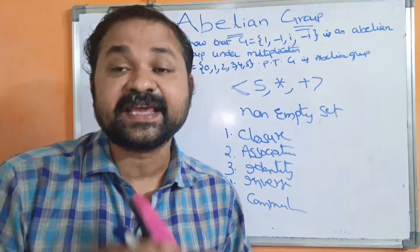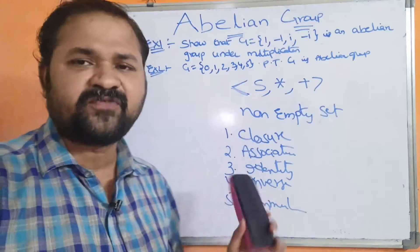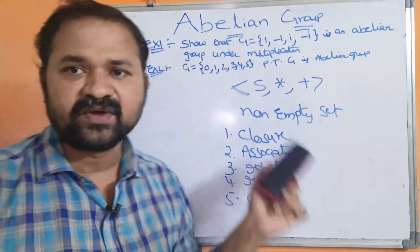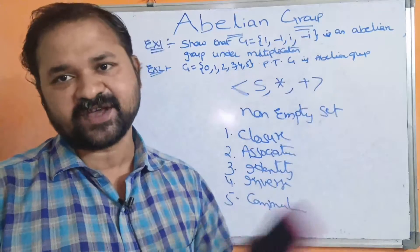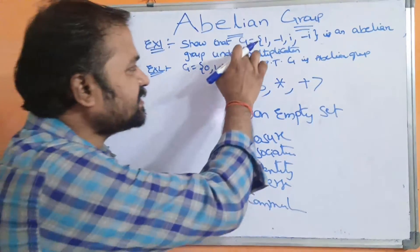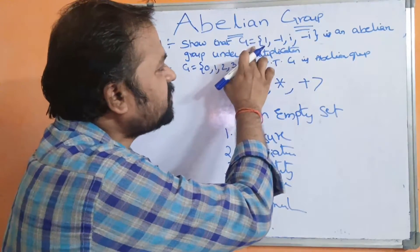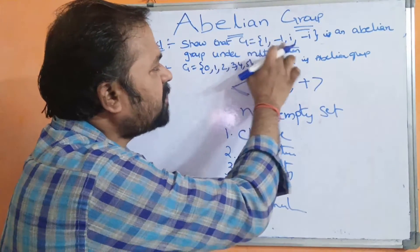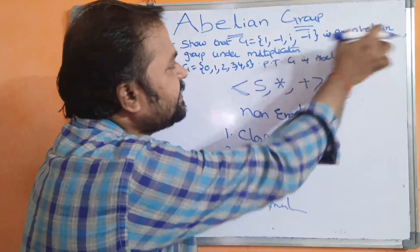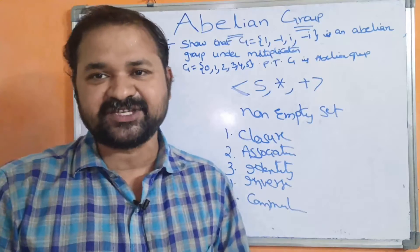If an algebraic system satisfies these five properties, then we can say that it is an abelian group. We will discuss all five properties one by one and parallelly solve two examples. The first example: Show that G = {1, -1, i, -i} is an abelian group under multiplication.